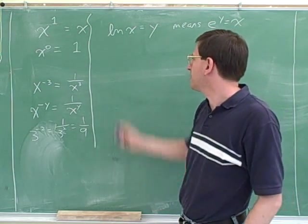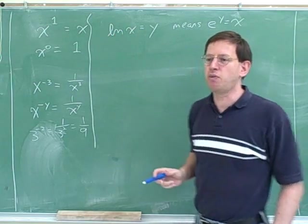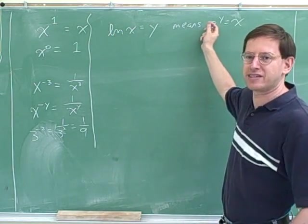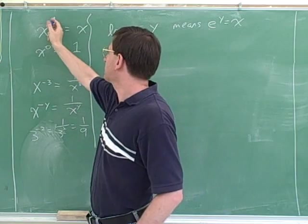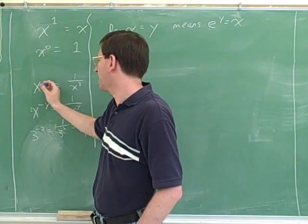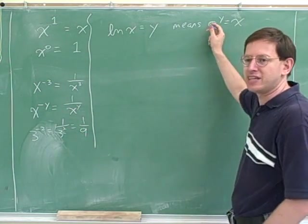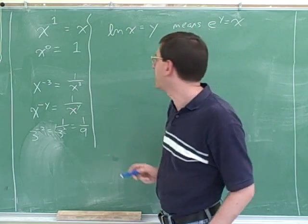So it's crucial to see that this means this. This is called the logarithm base e. And you can kind of see why, because here we're using e as a base. Of course, here this is an exponent and this is the base. Exponent 1, base x. Exponent 0, base x. Exponent negative 3, base x. Well, here I have exponent y and base e. So this is the logarithm base e, the natural log.